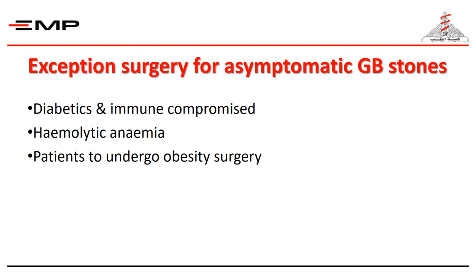There are few exceptions to operating on asymptomatic gallbladder stones. Immunocompromised patients and diabetics shall ultimately develop acute inflammation, which can rapidly progress to empyema and gangrene with grave consequences; cholecystectomy is done as prophylaxis against those anticipated serious complications. Hemolytic anemia shall result in continual formation of pigment stones, and obesity surgery enhances stone formation.